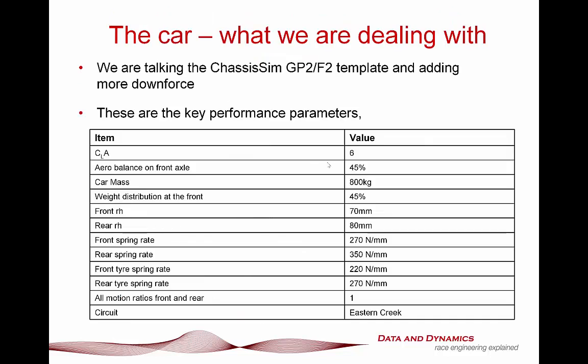Now we're going to introduce the case study. We're going to take the ChassisSim GP2/F2 template and effectively throw in a lot more downforce. We're dealing with a target downforce of CLA of about 6. Aero balance on the front axle is going to be about 45%, as is the weight distribution. We're targeting a static front ride height of 70mm and a rear ride height of 80mm. I would draw your attention to that front tyre spring rate: 220 newtons per millimetre. That is going to come back to affect us quite profoundly.